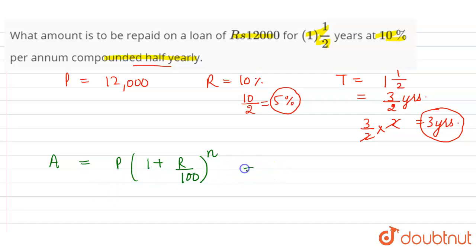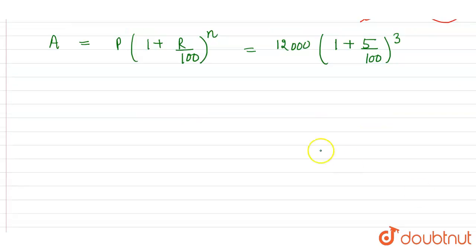Principle amount is twelve thousand into one plus rate of interest 5 divided by 100 raised to the power 3. So this is equal to 12,000. Here, 5 into 20 is 100. Taking the LCM of 1 and 20, the LCM is 20. One into 20 is 20.